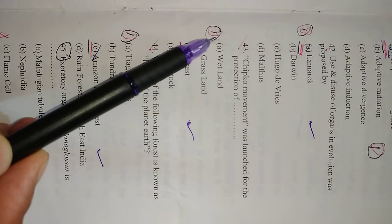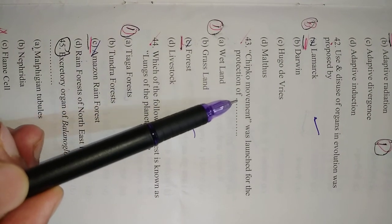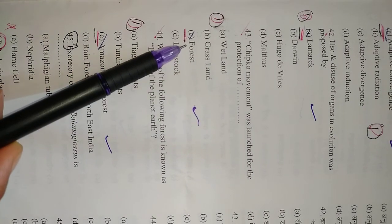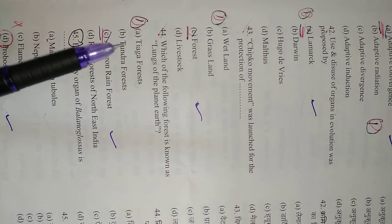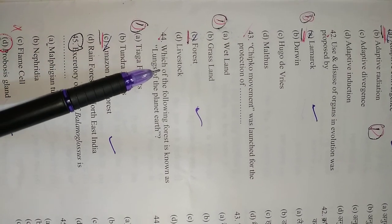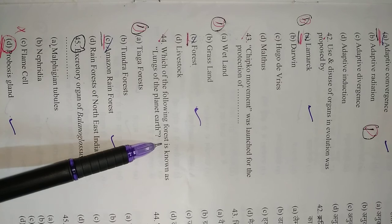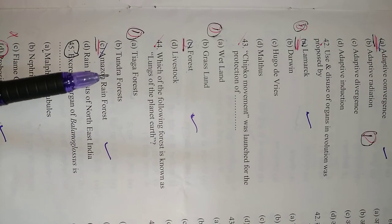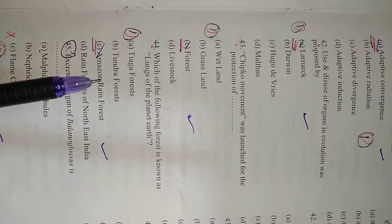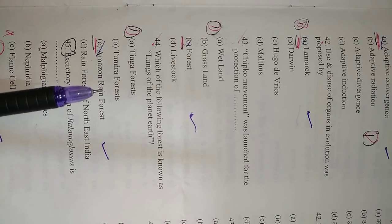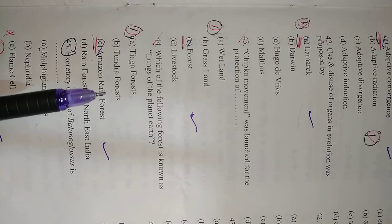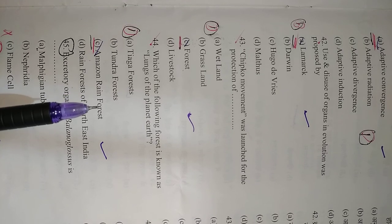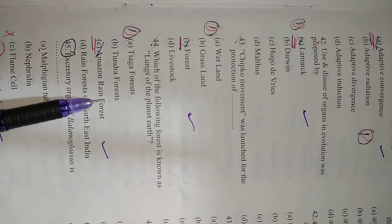Question number 43: Chipko movement was launched for the protection of forests. So right option is C, forest. Question number 44: Which of the following forest is known as the lung of planet Earth? As you have studied, the Amazon rainforest is the largest rainforest of the world, and these are the lungs of planet Earth as they produce large amounts of oxygen. So right option is C, Amazon rainforest.